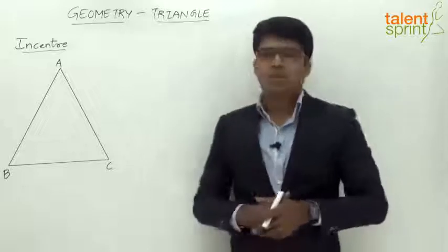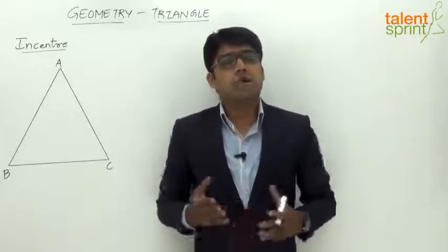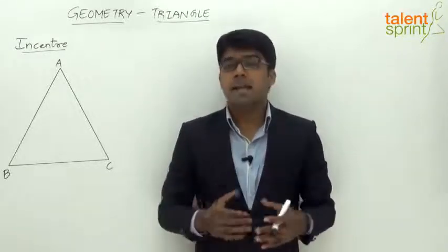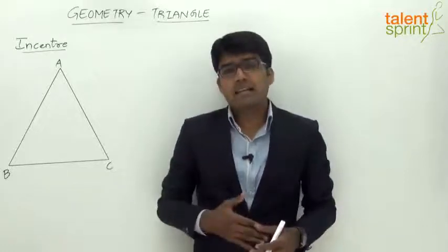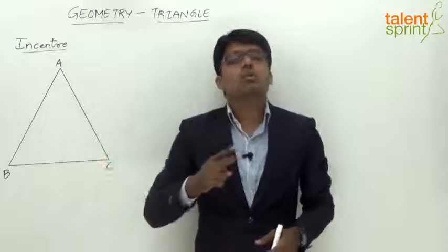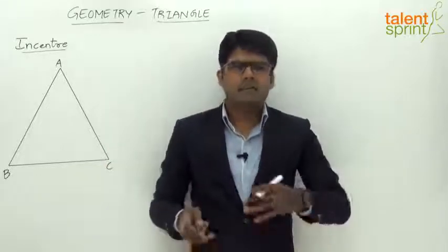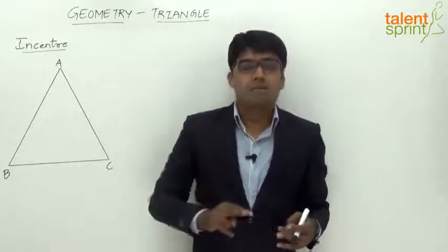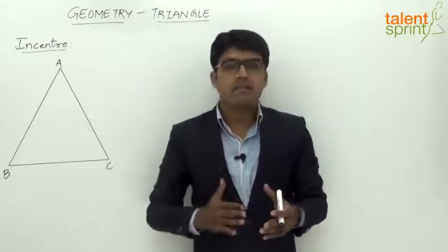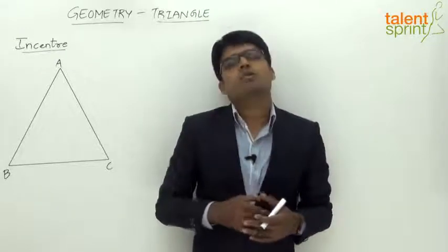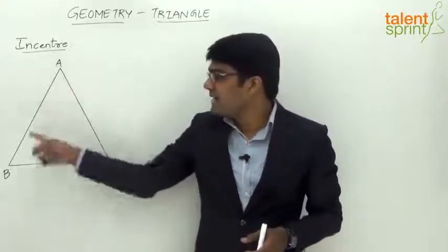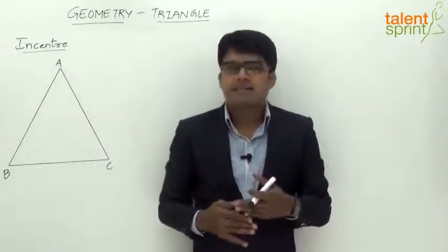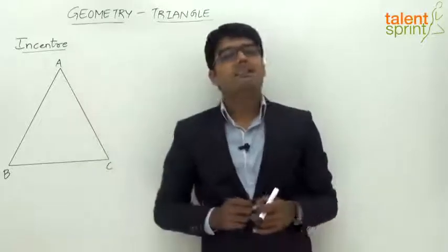The incenter is the point of intersection of the angle bisectors of the interior angles of a triangle. An angle bisector is a line that divides the interior angle into two equal parts. There can be two types of angle bisectors: interior angle bisectors or exterior angle bisectors, and both divide the angle into two equal parts. Since there are three interior angles in a triangle, we have three angle bisectors, and all three meet at a point known as the incenter.